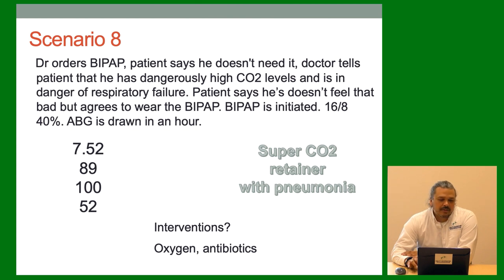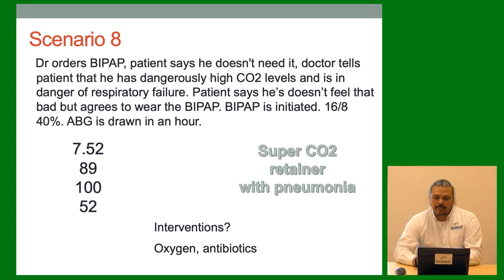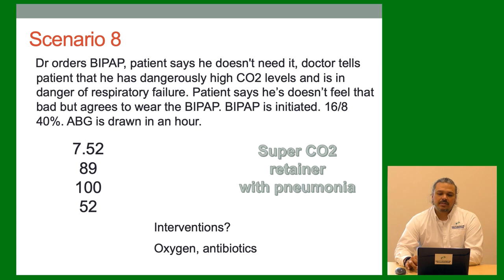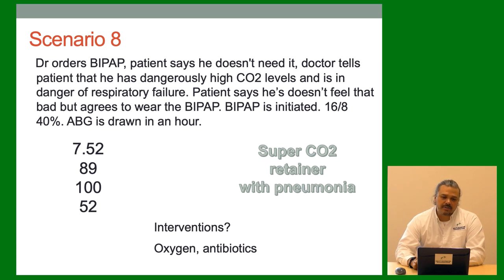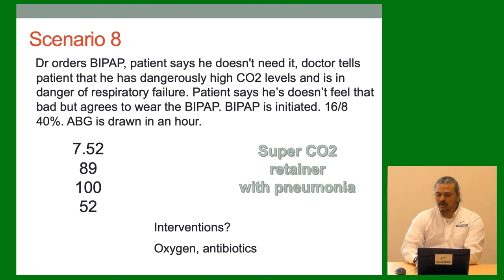Doctor orders BiPAP and of course that CO2 of 109 freaks out the doctor. Patient says he doesn't need it; doctor says he has dangerously high CO2 levels in danger of respiratory failure. Patient doesn't feel that way but agrees to wear the BiPAP. BiPAP is initiated and an ABG is drawn in an hour. We've now made him alkalotic and blew his CO2 from 109 to 89 — he probably didn't need that. This is what we call a super retainer. They have these traits where they compensate with a high bicarb around 50. He might have a normal CO2 at 100 or 80. Interventions: give him oxygen and antibiotics to treat his pneumonia. Keep an eye on him; if he decompensates, use BiPAP. But right now he doesn't need aggressive respiratory intervention.